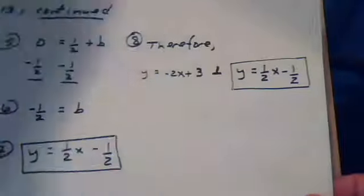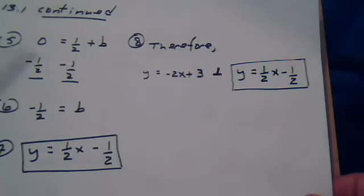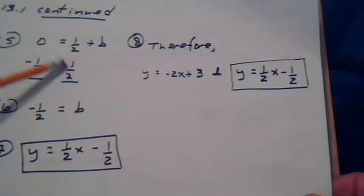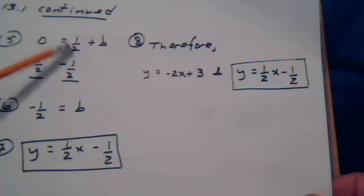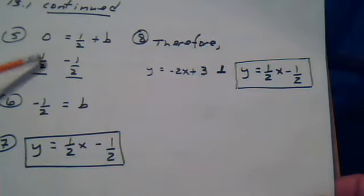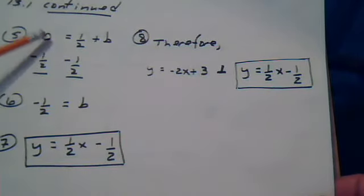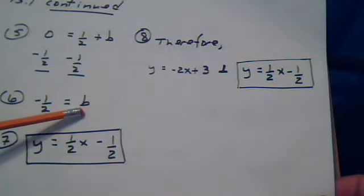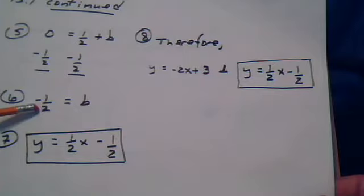So we're going to move this 1 half over. So we subtract the 1 half. This cancels to 0. But what you do to one side, you have to do to the other. So I subtract by a negative 1 half on the other side. So 0 minus 1 half is negative 1 half. So now we know that b equals negative 1 half.